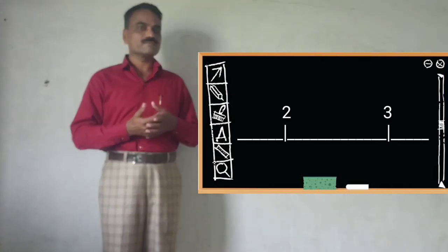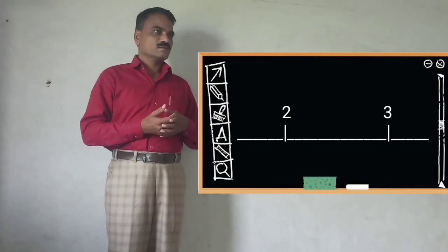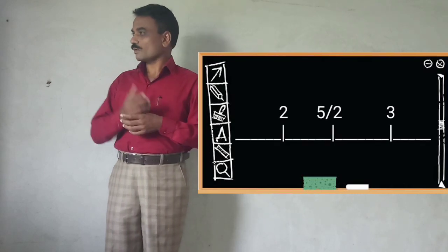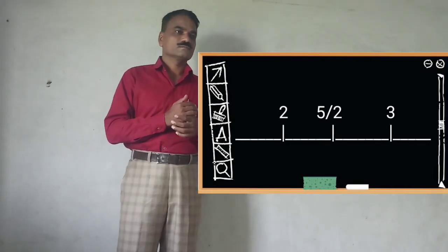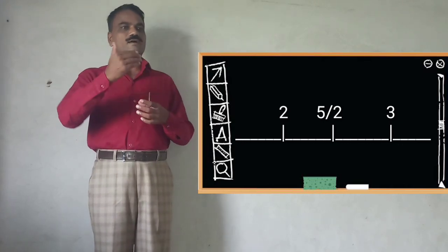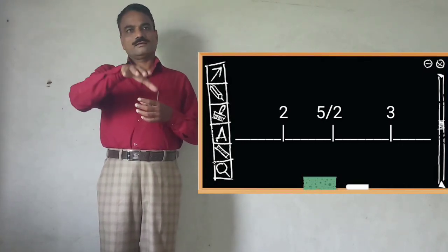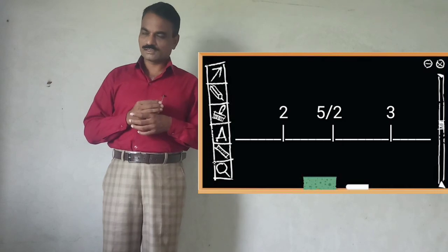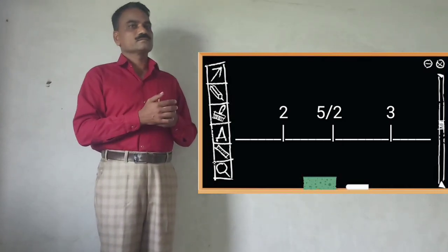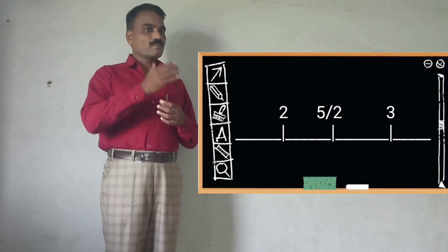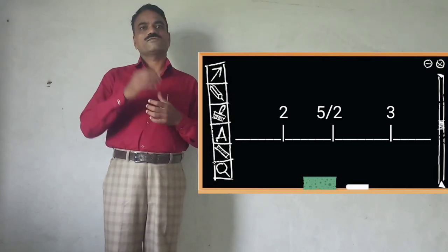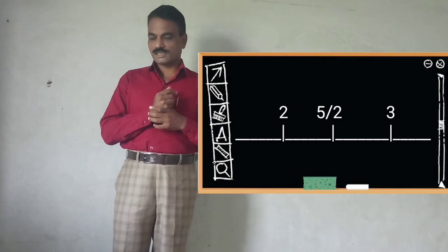In between two and three, there are infinite numbers present. For example, the number five upon two is in between two and three. Again, in between two and five upon two, there are infinite rational numbers. In the same manner, in between five upon two and three, there are also infinite rational numbers present.